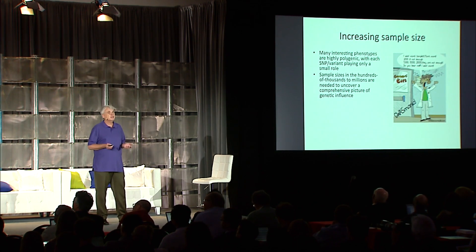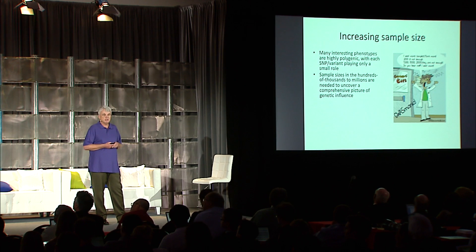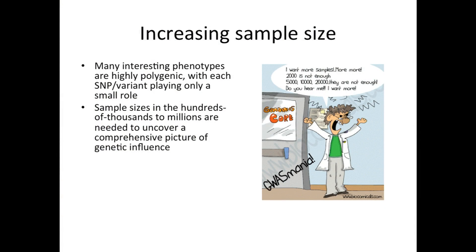I don't think I have to convince anyone here that it's a good thing to increase sample size. There are many interesting phenotypes out there that are highly polygenic — you have lots and lots of SNPs influencing a particular phenotype, and each one of those influences is very tiny. To get a comprehensive picture of the genetic influence of all these SNPs on that phenotype, you need large samples. We've heard the last few days of groups putting together data sets with sample size on the order of 100,000 going up to a million, and that's the scale I want to talk about today.